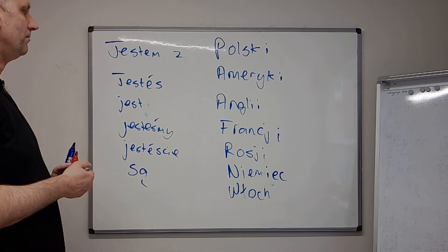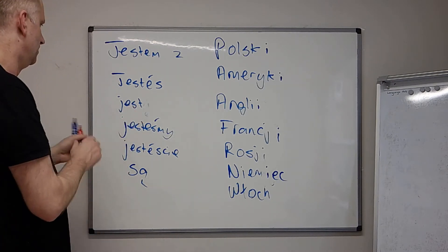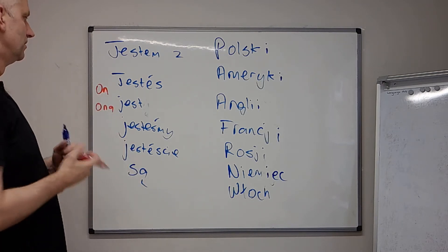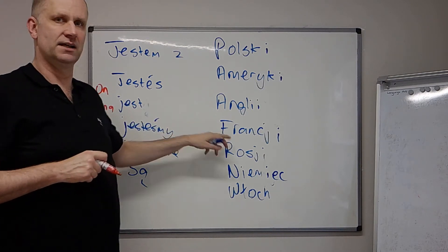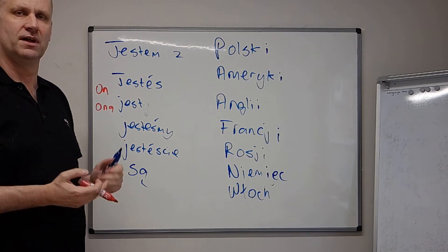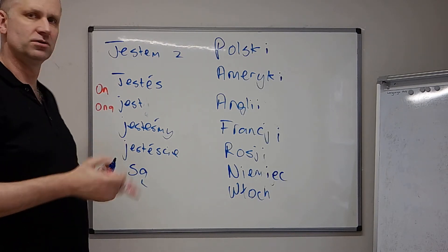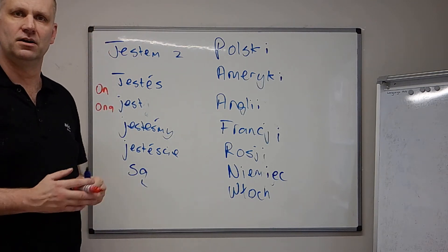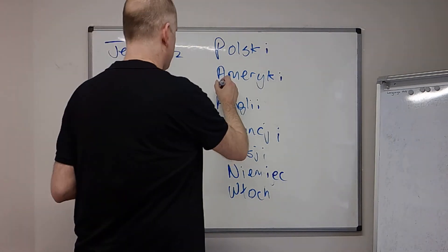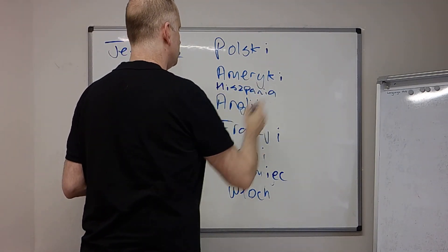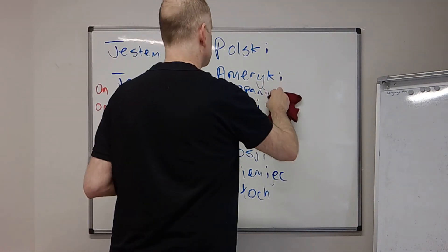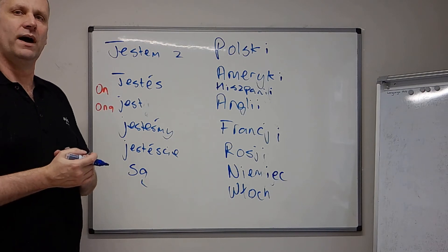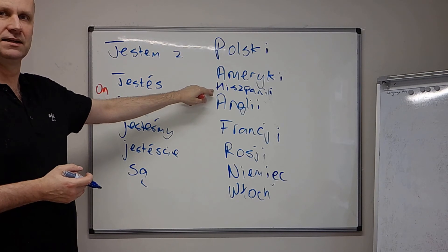So if you want to say something like 'he is from France' — on jest ze Francji. If you want to say 'Vladimir is from Russia' — Vladimir jest ze Rosji, or on jest ze Rosji. We should also add Spain — Hiszpania, Hiszpania. So ze Hiszpanii. And są ze Hiszpanii means 'they are from Spain'.